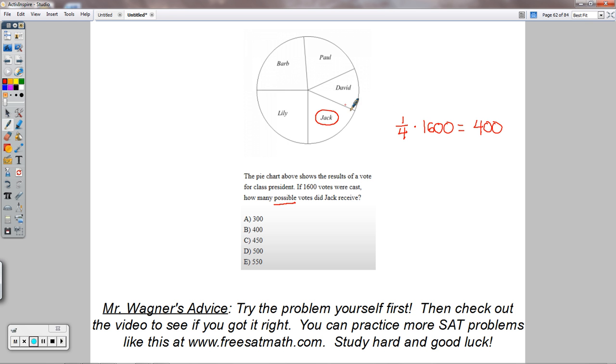And I can assume, looking at the picture, that Jack got fewer than that. And the only possible answer then, the only one that's actually fewer than the 400 votes that 25% of the votes would get you, would be choice A.